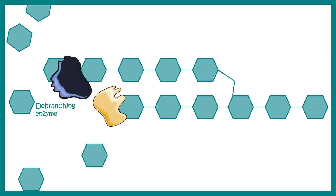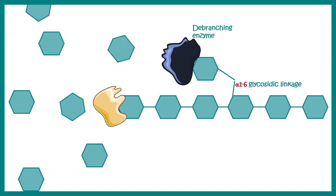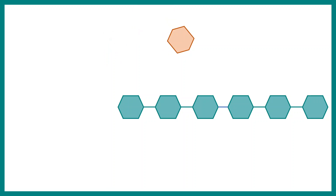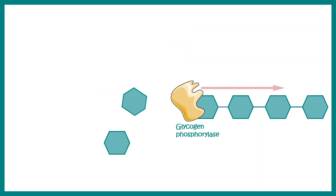At the branch point, glycogen phosphorylase is replaced by the debranching enzyme. The debranching enzyme can cleave the branch point because it breaks alpha-1,6 glycosidic linkages. Once debranching enzyme has removed the branch-point glucose, glycogen phosphorylase can be recruited back to the linear chain to break down glycosidic linkages and free up glucose residues.